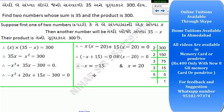Setting each factor to zero: x minus 20 = 0 gives x = 20, and minus x plus 15 = 0 gives x = 15. So our two numbers are 15 and 20. Verification: 15 into 20 is 300, and 15 plus 20 is 35. So the answer is 15 and 20.